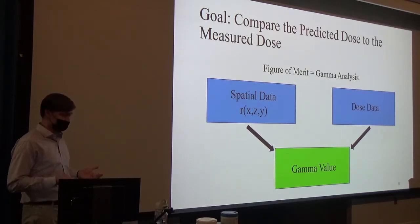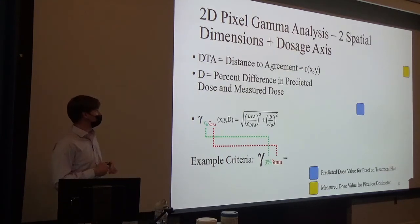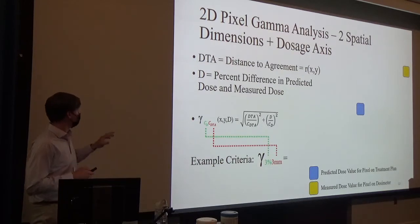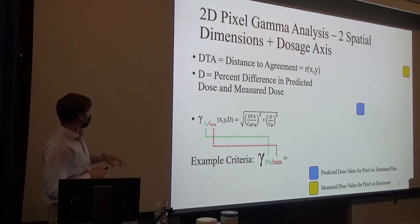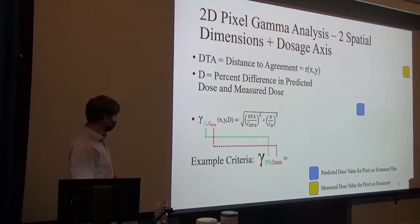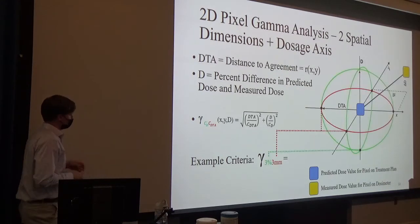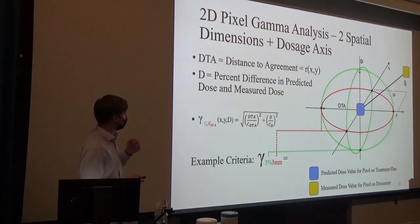We need to calculate a gamma value, which is extremely complex, so I'll explain it in two dimensions using pixels — though what we actually did was a 3D voxel gamma analysis. In 2D, you have two spatial dimensions and a dose axis. The DTA — distance to agreement — is where you are on one pixel versus the other, for predicted dose versus measured dose. Through this equation, we come up with a value and select criteria to test against. In this case, D represents the percent difference between predicted and measured dose. So this would be a 3% difference in doses within a three-millimeter search range between pixels. Applying this to a graph, the red circle is the spatial component — a 3mm range on the X and Y axes — and the dose comparison, the percent difference, is on the Z axis. This forms a volume, or ellipsoid.